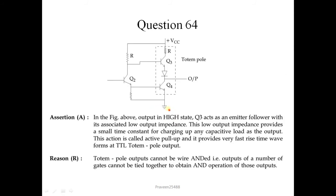Question number 64. In a TTL totem pole output, transistor Q3 acts as an emitter follower with its associated low output impedance. This low output impedance provides a small time constant for charging any capacitive load. This is called active pull-up and provides very fast rise time waveforms. This statement is correct. Totem pole outputs cannot be wire-ANDed — this is also correct. However, both statements are true but R is not the correct explanation of A, so option 2 is correct.